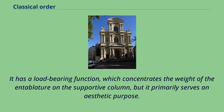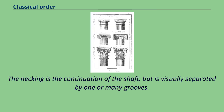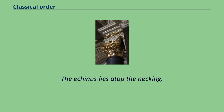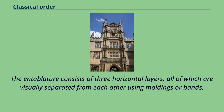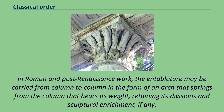The capital rests on the shaft. It has a load-bearing function, which concentrates the weight of the entablature on the supportive column, but it primarily serves an aesthetic purpose. The necking is the continuation of the shaft, but is visually separated by one or many grooves. The echinus lies atop the necking — a circular block that bulges outwards towards the top to support the abacus, which is a square or shaped block that in turn supports the entablature. The entablature consists of three horizontal layers, all visually separated from each other using mouldings or bands. In Roman and post-Renaissance work, the entablature may be carried from column to column in the form of an arch that springs from the column that bears its weight, retaining its divisions and sculptural enrichment, if any.